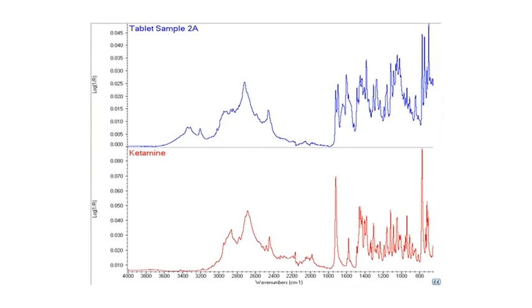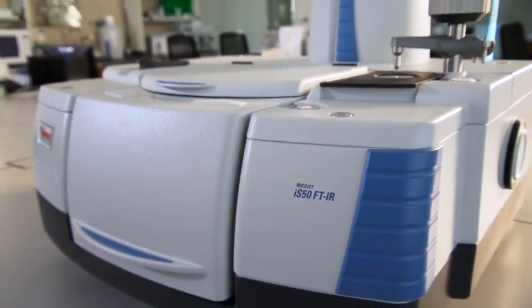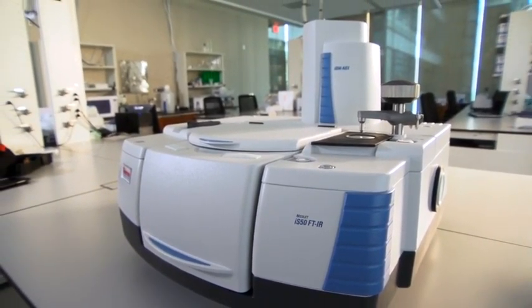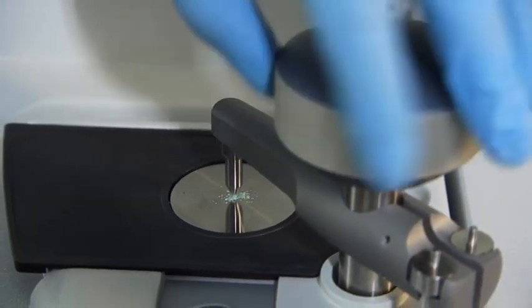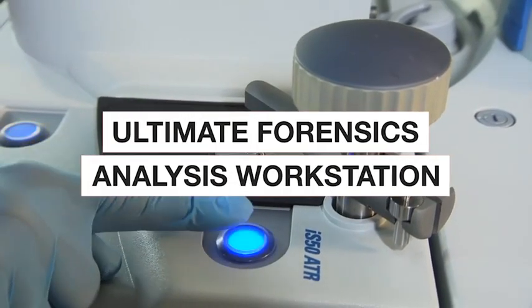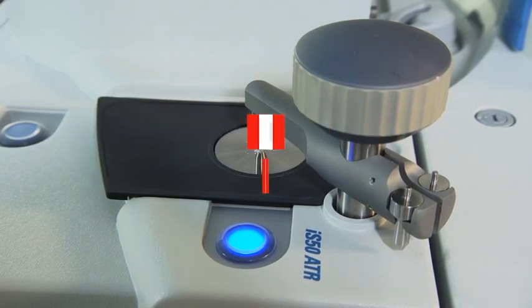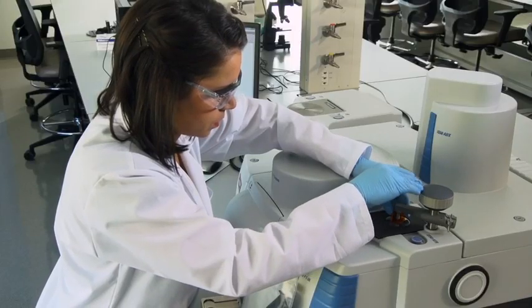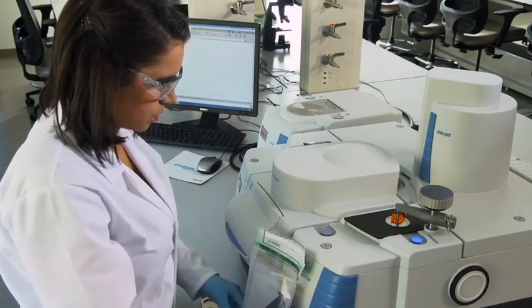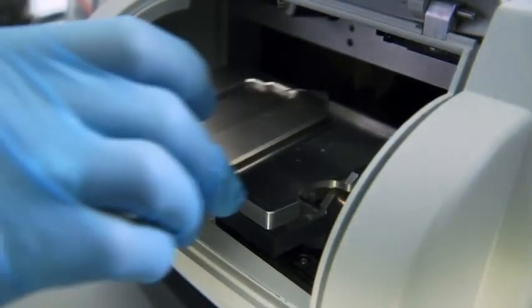That's why the Thermo Scientific Nicolet IS50 FTIR spectrometer, with its combination of technological sophistication, analytical flexibility, and ease of use, is the ultimate forensics analysis workstation. Because it switches techniques in only a few seconds, the Nicolet IS50 reduces analysis time and cost while providing unprecedented analytical power.